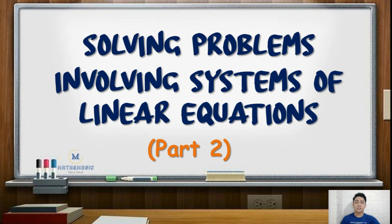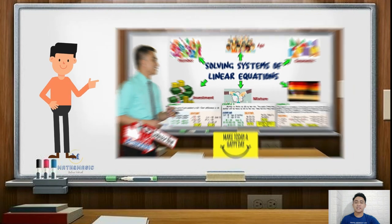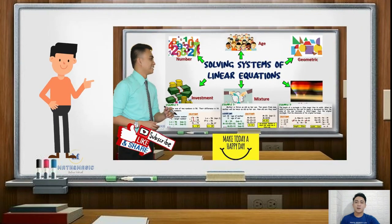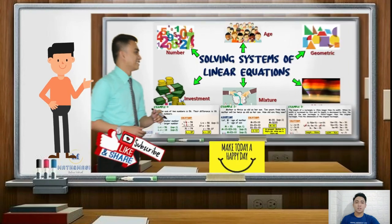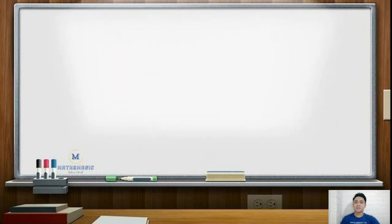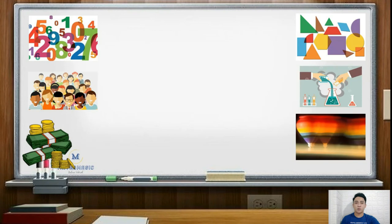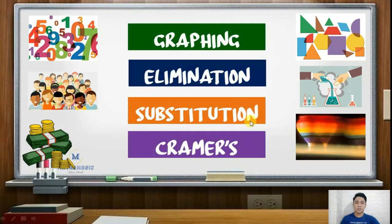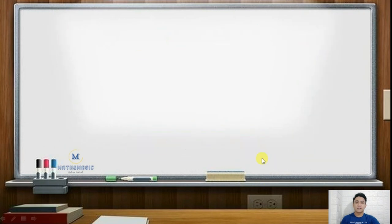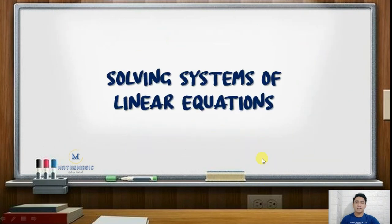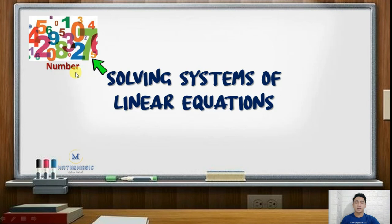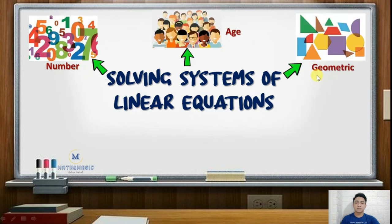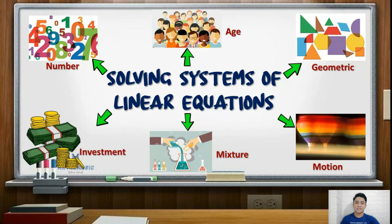If you are new to this channel, I recommend watching this video first. Last time we saw that solving linear systems can be done in different ways, including elimination, substitution, graphing, and Cramer's rule. This concept can also be applied in different areas like number-related, age, and geometric. And now, we will be answering problems involving motion, mixture, and investment.